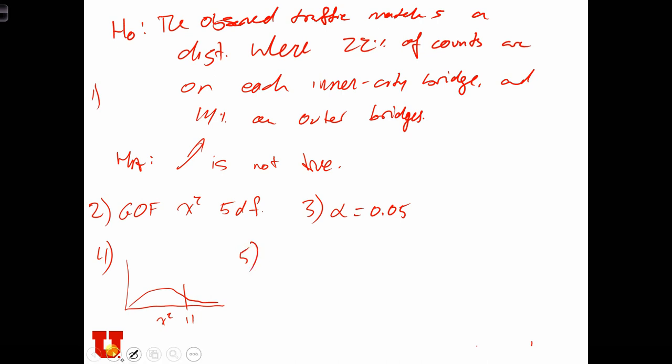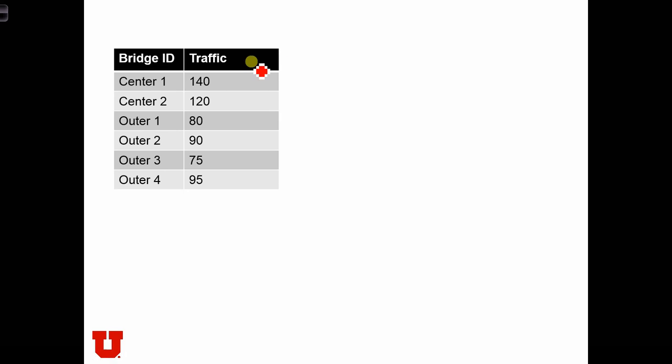So let's use the table again. In this case, these are the OIs. We're going to have, instead of having 600 over 6 for each expected value, we're going to use the percentages that were stated in the null hypothesis. So in this case, the expected value,